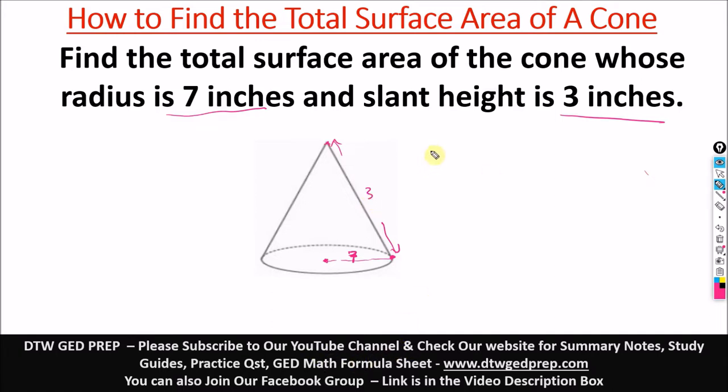From our GED formula sheet, the formula for the total surface area of a cone is pi r s plus pi r squared. Don't be confused about this S because I know for some textbook they use L instead of S. But on your GED formula sheet, what is used is S. So don't get confused about this. S is the slant height. L can also be the slant height.